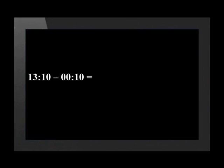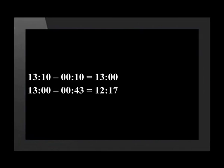10 past 1 minus 10 minutes gives us the time of 1 o'clock. 1 o'clock minus 43 minutes gives us a time of 17 minutes past 12.